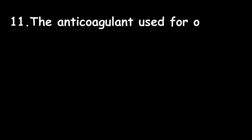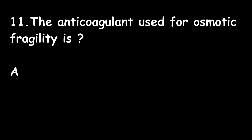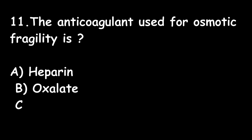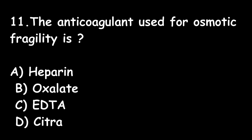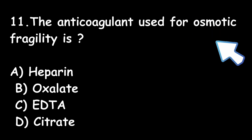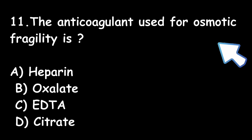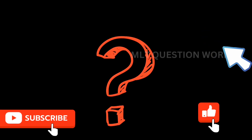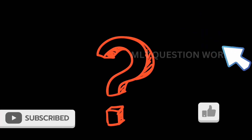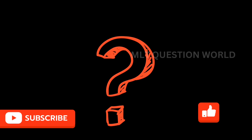Next question: The anticoagulant used for osmotic fragility test is — Option A: Heparin. Option B: Oxalate. Option C: EDTA. Option D: Citrate. We have discussed anticoagulants and blood collection in previous classes. The answer to this question is not given here; you have to comment the answer below.